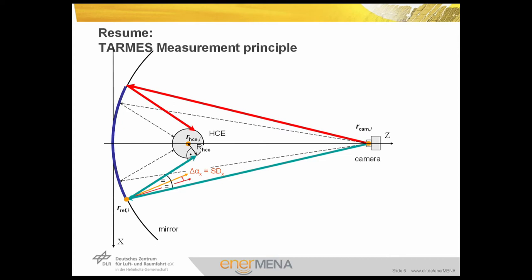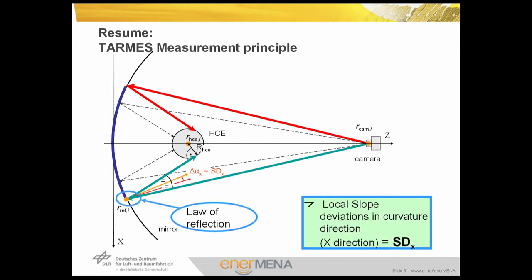Before having a look at the single steps of the evaluation procedure, let's resume the TOMAS measurement principle. It is based on a deflectometry measurement, and the absorber tube serves as the pattern. We use the reflection of the edge of the absorber tube to obtain the slope at the point of reflection. From the position of the camera, the position of the reflection, and the position of the absorber tube edge, we can calculate the local slope and compare it to the design value. With the TOMAS measurement principle, we can obtain only slope deviations in curvature direction.